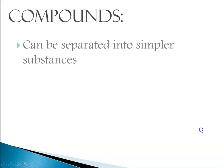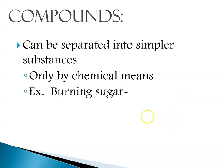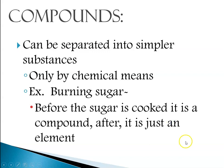Compounds are made up of elements, and they can be separated into their individual elements only by chemical means. For example, when you burn the compound sugar, all that's left is going to be elements. Before it is cooked it is a compound — it might be glucose or sucrose — and afterwards, all we would have left would be the elements carbon, hydrogen, and oxygen.